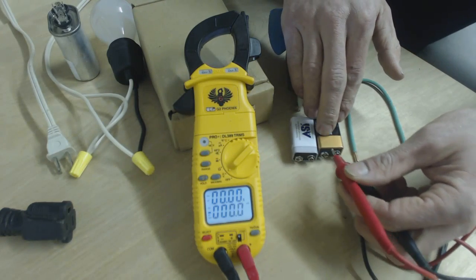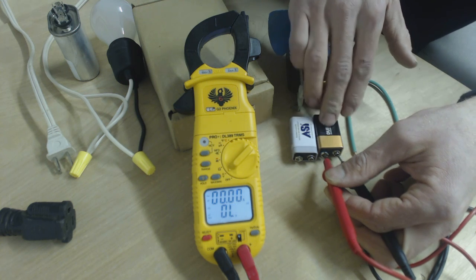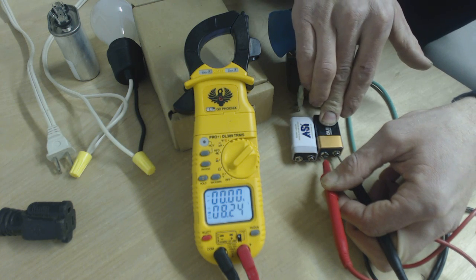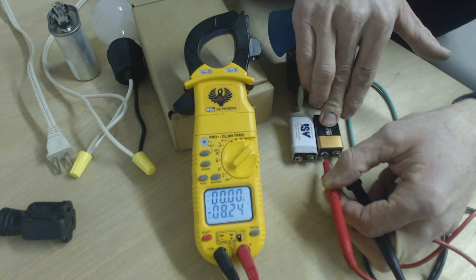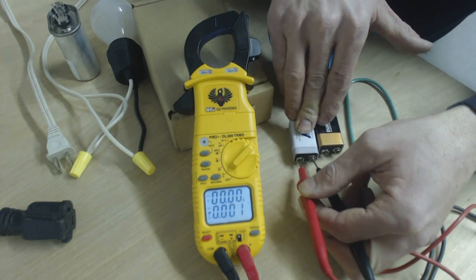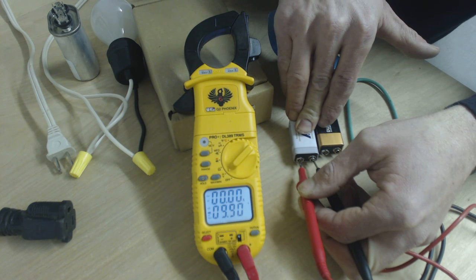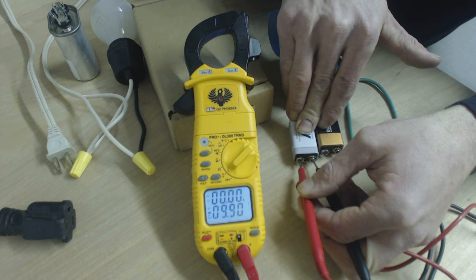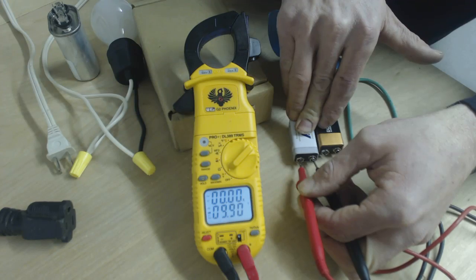The first one that we're going to test is this 9 volt battery. We get 8.24 volts, which is more than 5% off of 9 volts, so that battery is bad. This one is a 9 volt battery and it reads 9.9 volts. It's well over 9, so that is good.